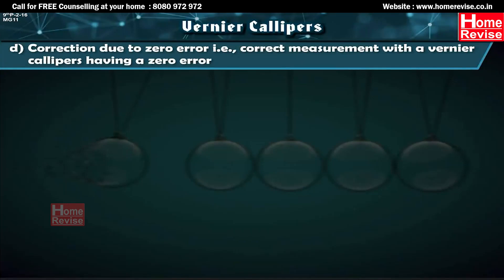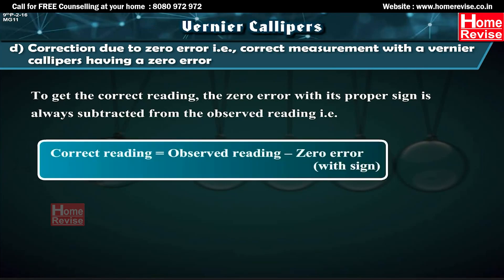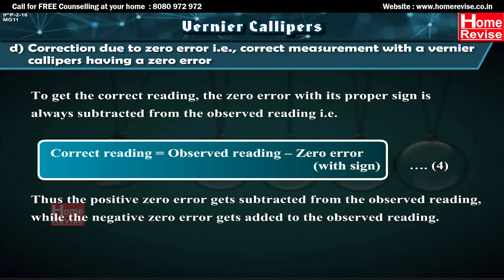Correction due to zero error: to get the correct reading, the zero error with its proper sign is always subtracted from the observed reading. That is, correct reading = observed reading − zero error (with sign). Thus, a positive zero error is subtracted, while a negative zero error is added to the observed reading.